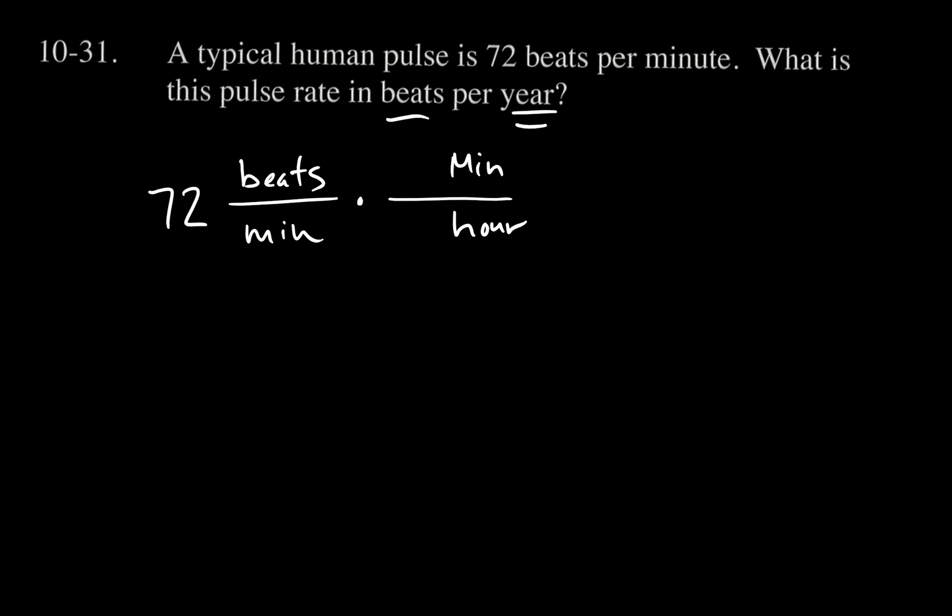If I write 60 in the numerator and 1 in the denominator, this equals one, right? 60 minutes is the same amount of time as one hour. So I just multiplied 72 beats per minute times the number one.